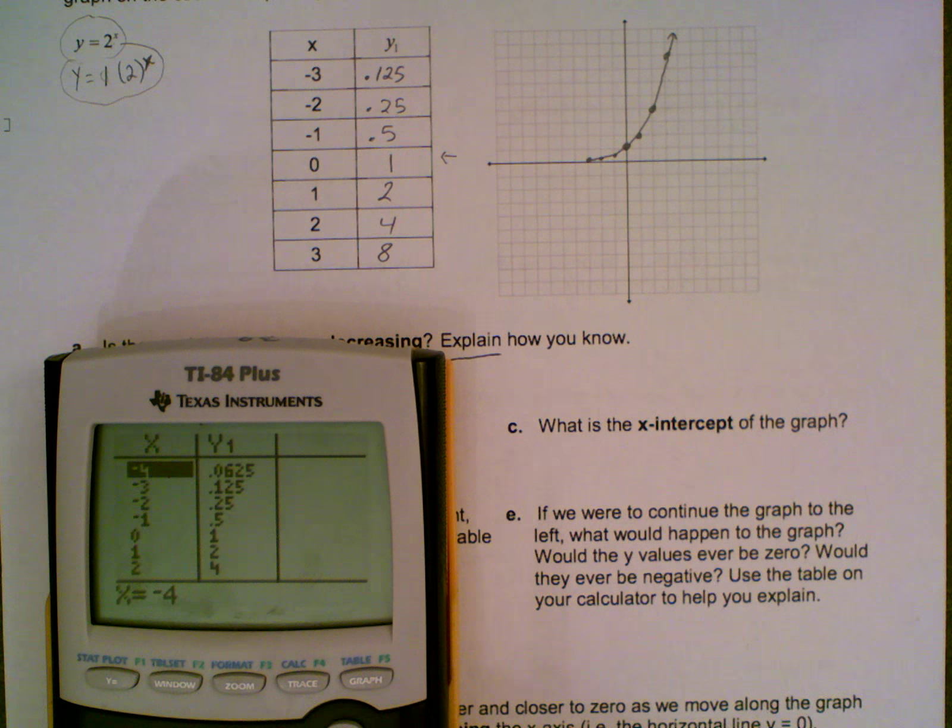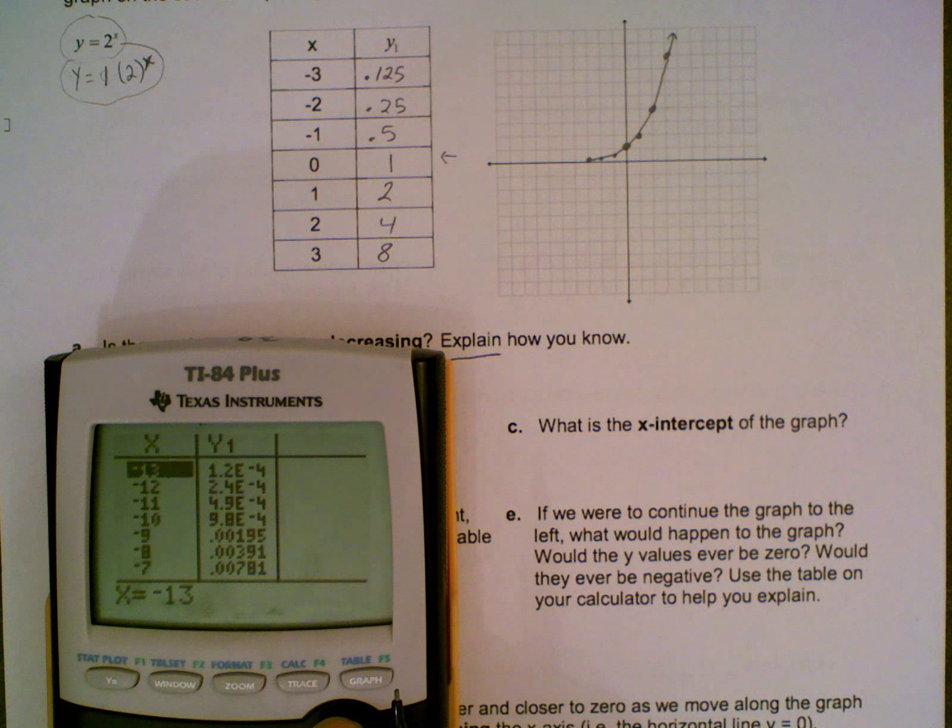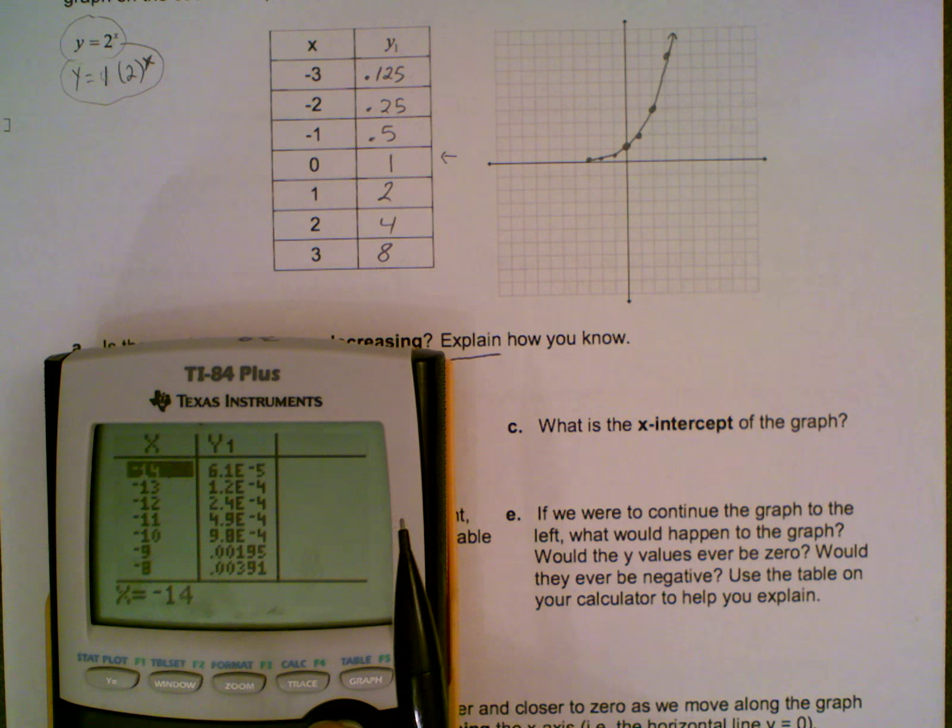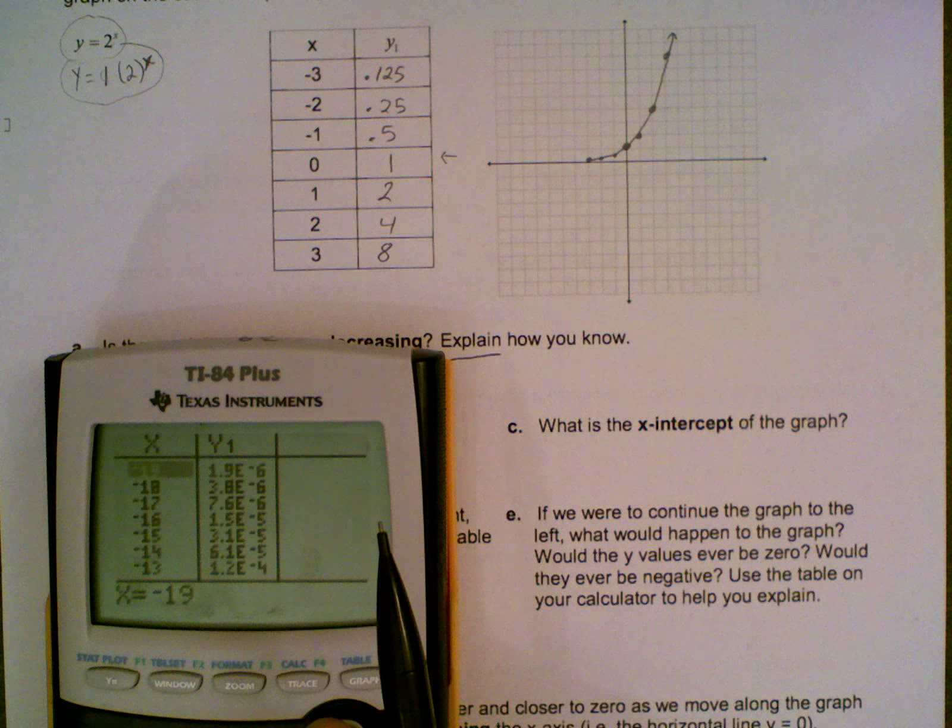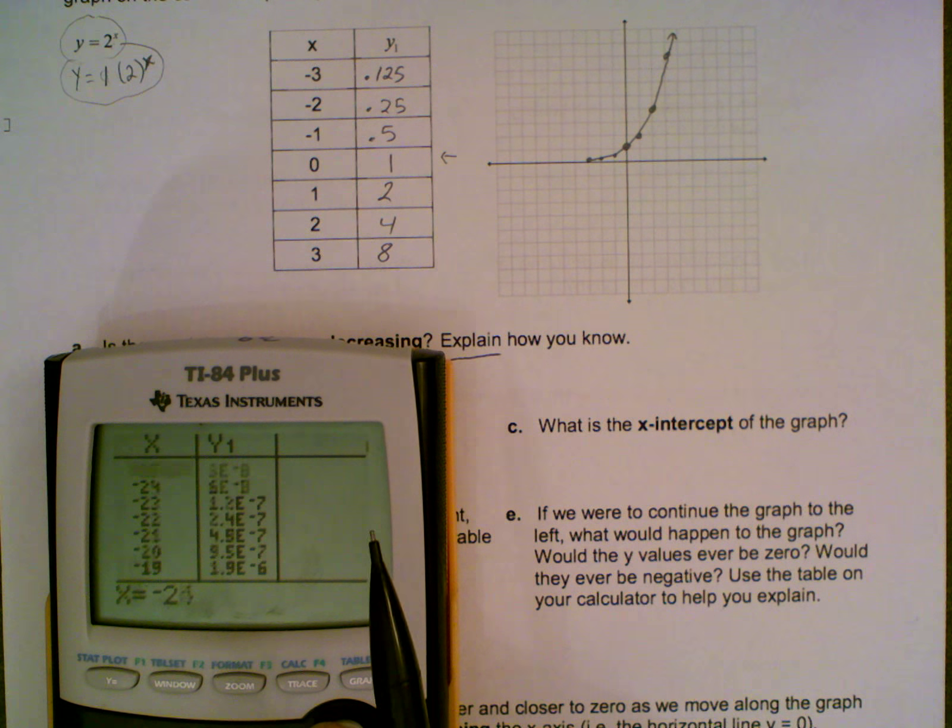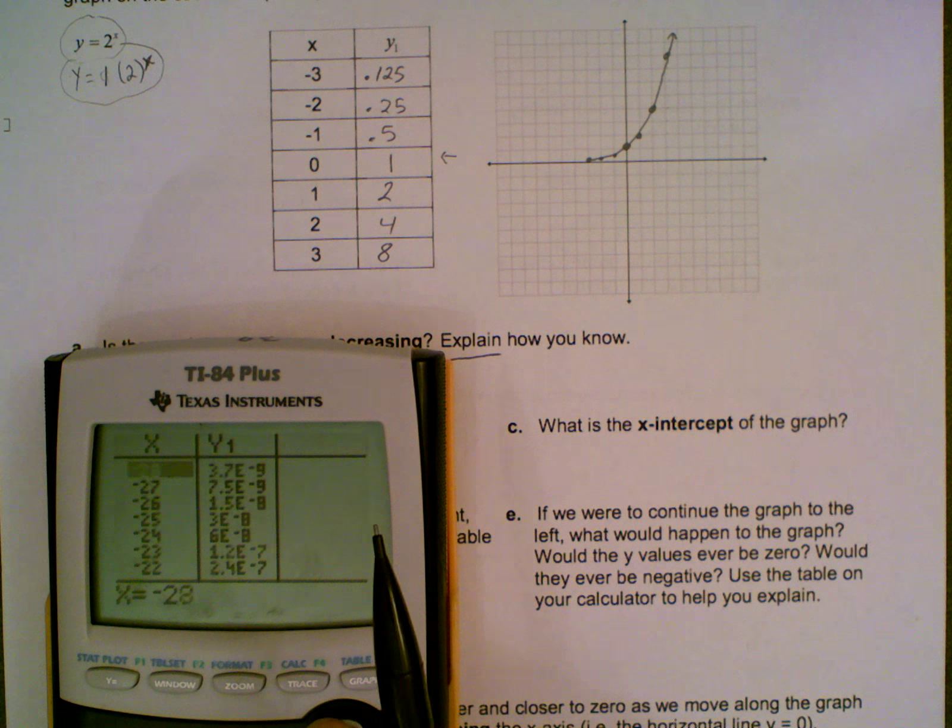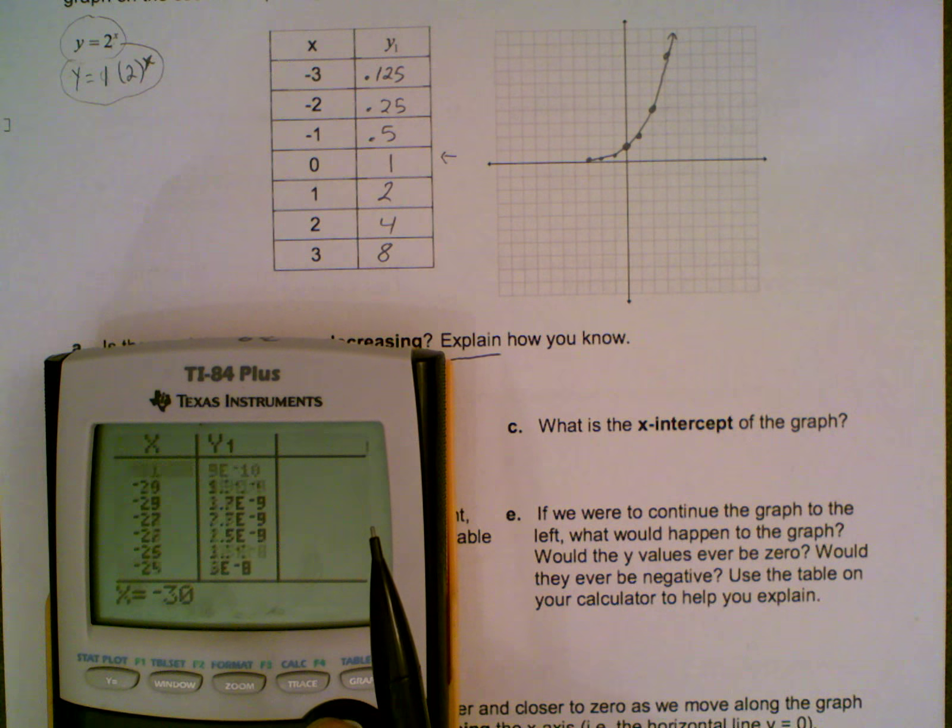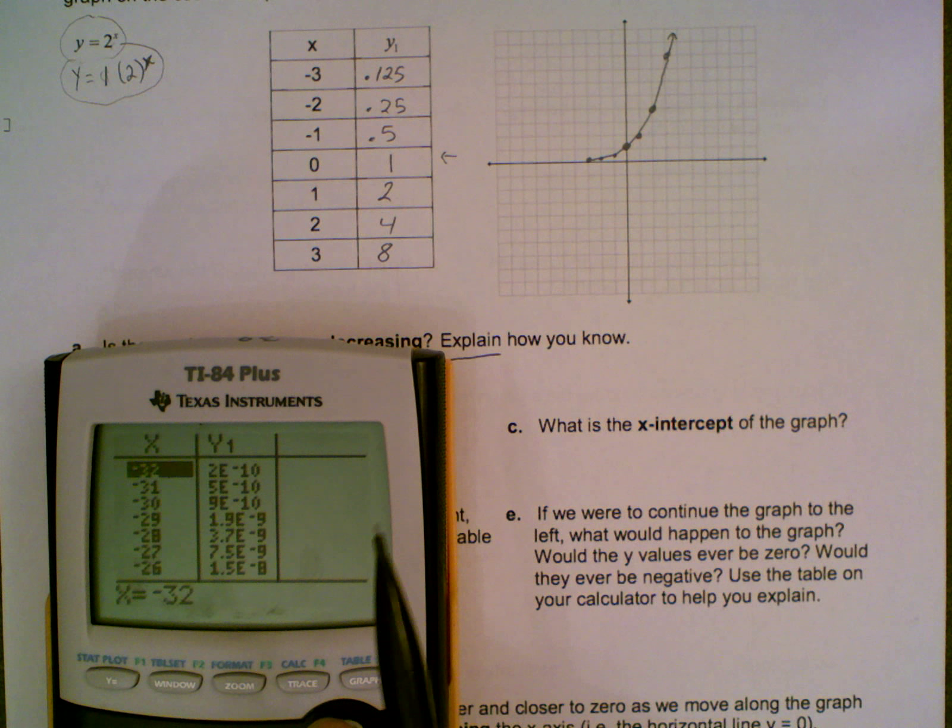Alright, negative 3 is where we started. We're going to keep on going. We're getting smaller, smaller, smaller, really small. Oh, now we're into scientific notation, so that means there's going to be 4 zeros. And we're going to keep getting smaller and smaller, but we're never actually going to reach 0, as you can see.